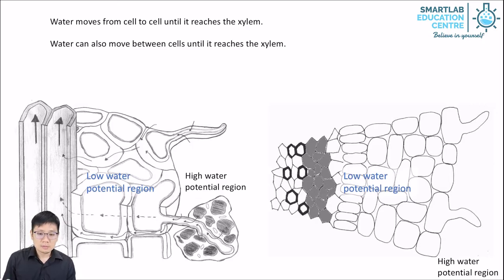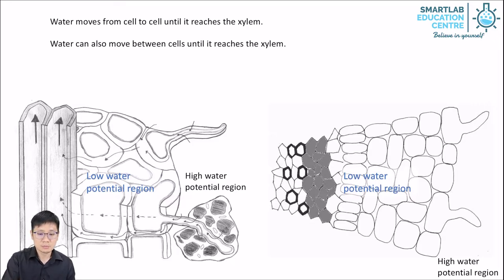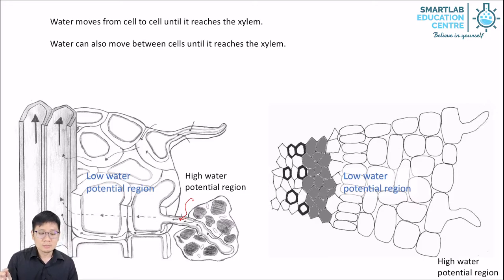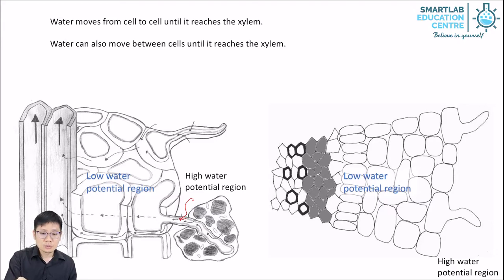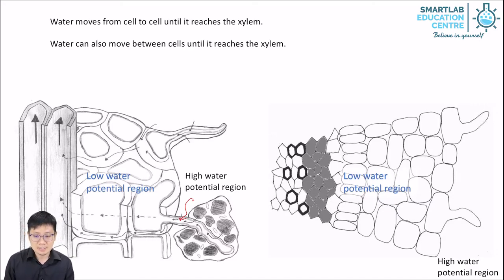First let's talk about water. Water moves from cell to cell until it reaches the xylem. The water will first be absorbed through the root cells on the surface — these are the root hair cells absorbing water by osmosis. Each cell more towards the center of the root has a lower water potential, so there is a water potential gradient and the water will be absorbed from the outer cells to the inner cells until it reaches the xylem.